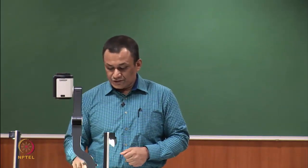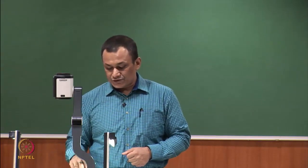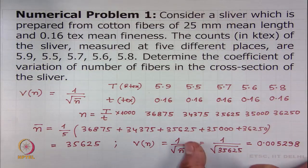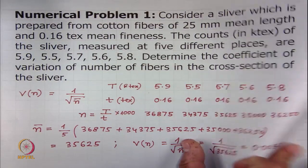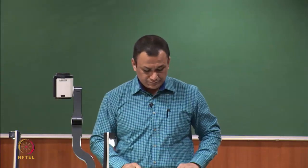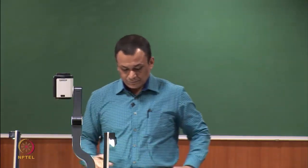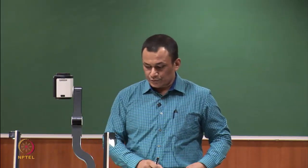The coefficient of variation of number of fibres in the cross section of the sliver is equal to 0.5298 percent. This completes numerical problem 1. We now proceed to numerical problem 2.